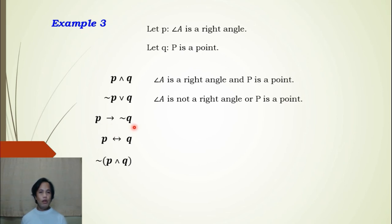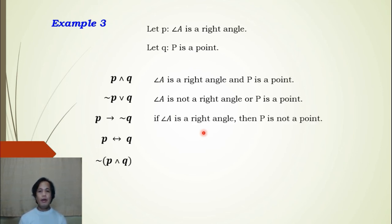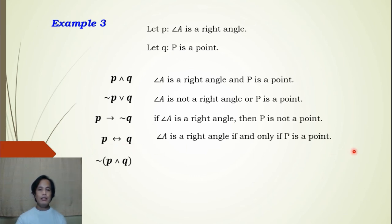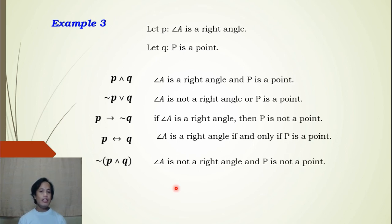Next is p → ~q, which is implication or conditional. We write: If angle A is a right angle, then P is not a point. Here p is not negated, but q is negated. Since this is implication, we use an if-then statement. For biconditional p ↔ q with neither negated: Angle A is a right angle if and only if P is a point. For the negation of the conjunction (~p ∧ ~q): Angle A is not a right angle and P is not a point, since both p and q are negated.